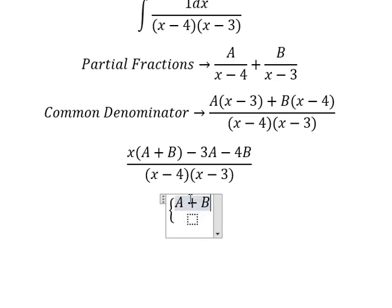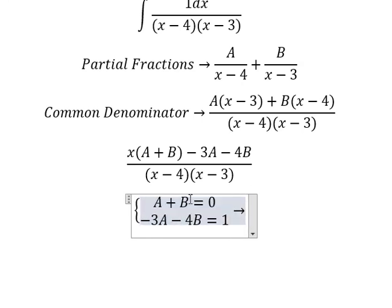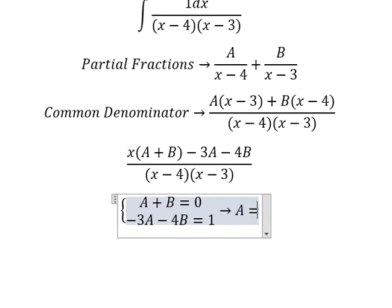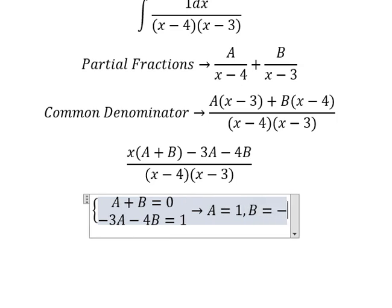A plus B equals 0, and negative 3A minus 4B equals 1. Now we need to find the solution for A and B. Solving this system: capital A equals 1, capital B equals negative 1.